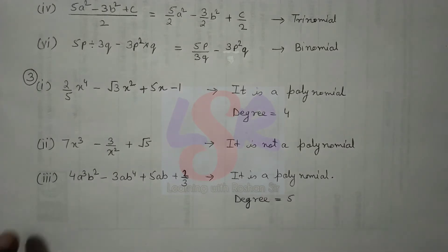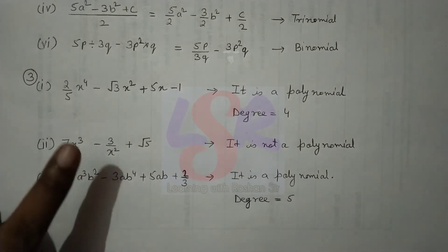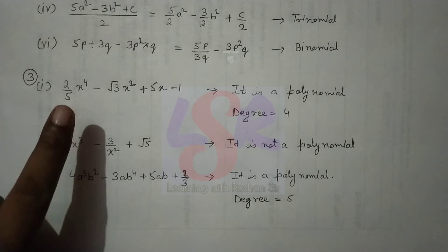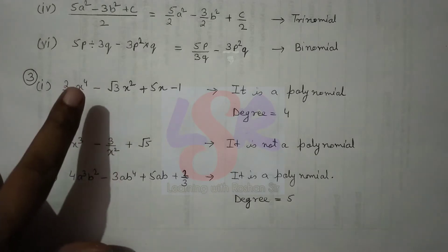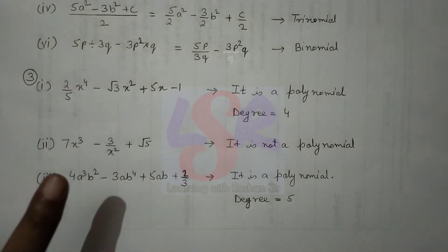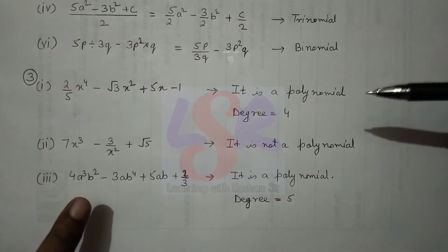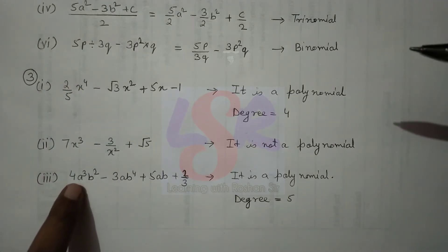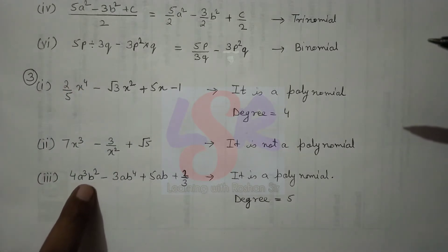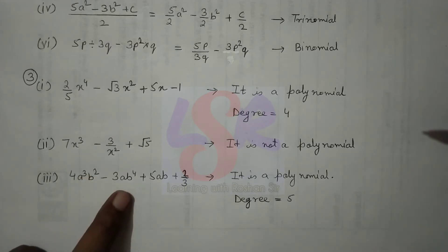To summarize: if we have a single variable, we take the highest power as the degree. But if we have a group of variables in a term, we add their powers to find the degree of that term.